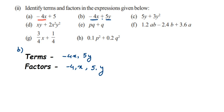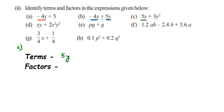Third expression: 5y plus 3y square. The terms are 5y and 3y square. For the first term 5y, the factors are 5 and y. For the second term 3y square, y is multiplied two times, so the factors are 3, y, and y.